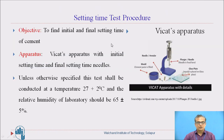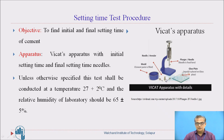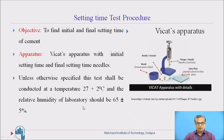Let us see the procedure of the setting time test. Objective: to find the initial and final setting time of cement. Apparatus used: Vicat apparatus with initial setting time and final setting time needles. Here you can see the Vicat apparatus — there is a mould, different needles including the initial setting time needle and final setting time needle, a plunger required for consistency test, and a glass plate. This test shall be conducted at a temperature of 27 ± 2°C and the relative humidity of the laboratory should be 65 ± 5%.